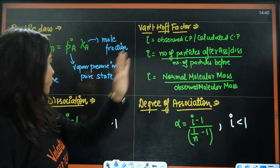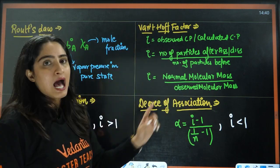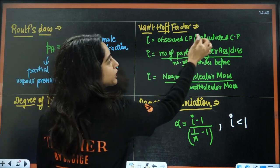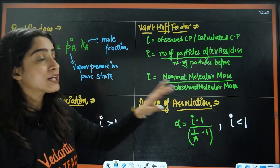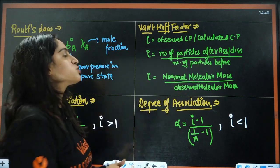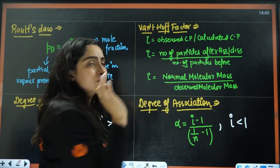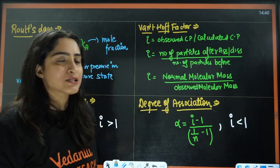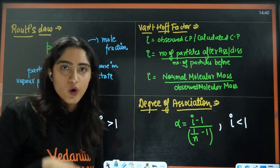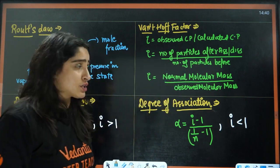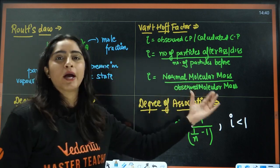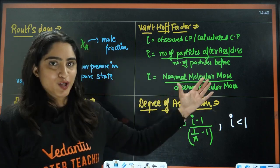Next, we have the Van't Hoff factor. For the Van't Hoff factor, i equals observed colligative property divided by calculated colligative property. That also equals number of particles after association or dissociation divided by number of particles initially. Then we have normal molecular mass divided by observed molecular mass.